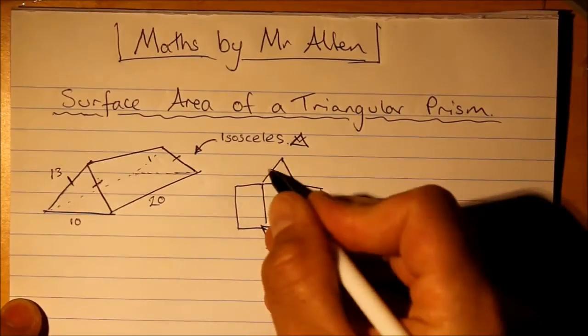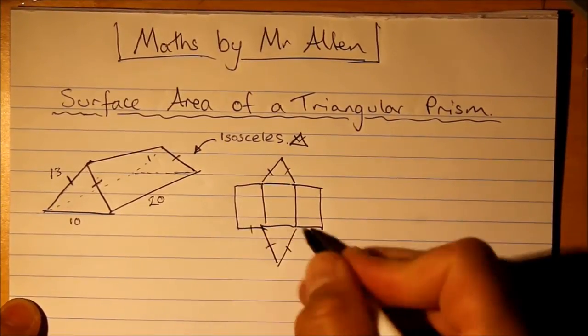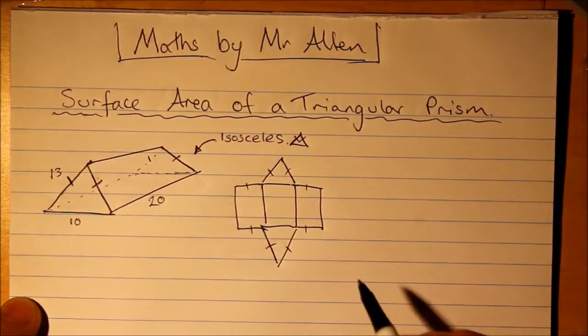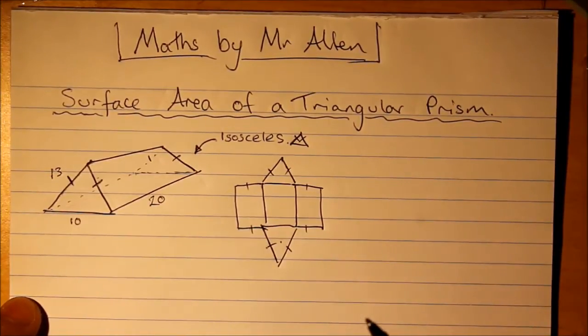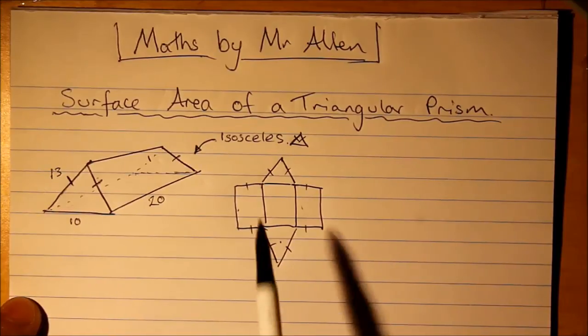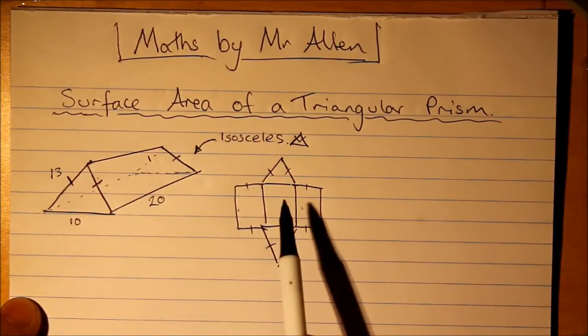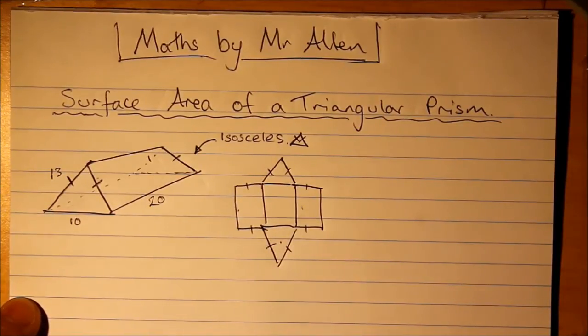Okay. Now, what you'll notice is that you've got two identical triangles, two identical rectangles, and then one rectangle on the bottom. That's going to be different.